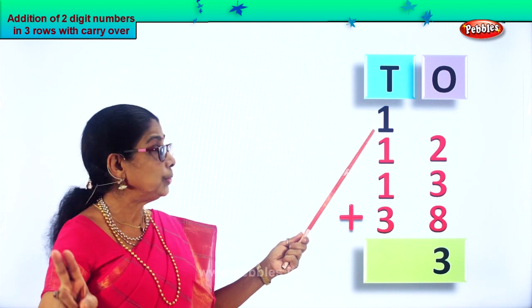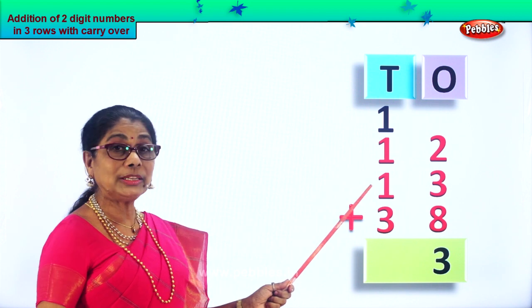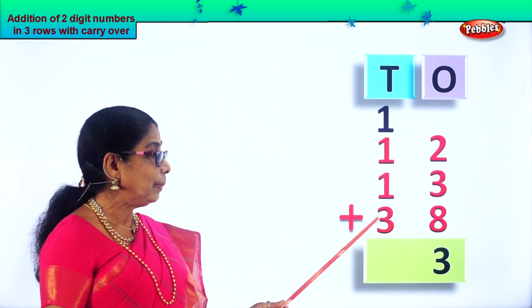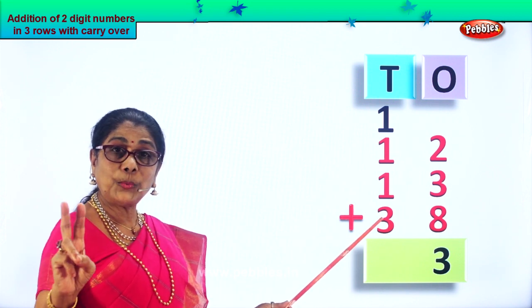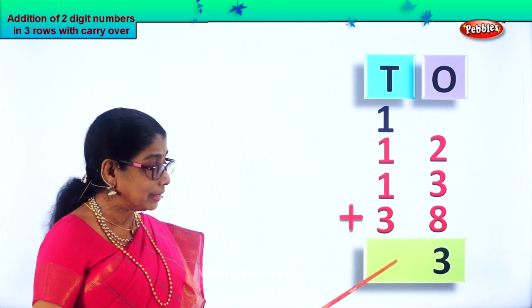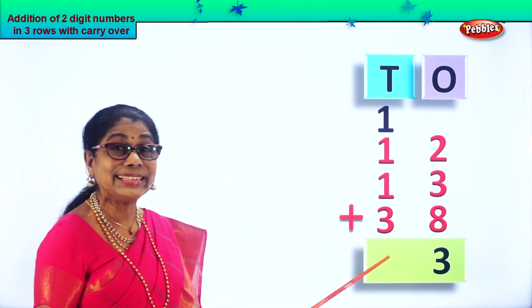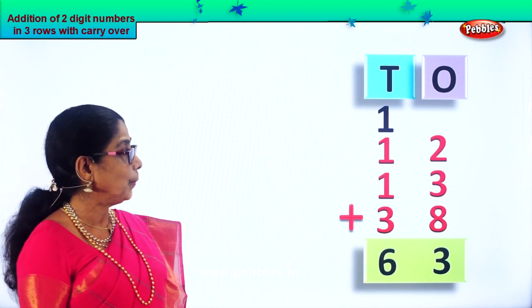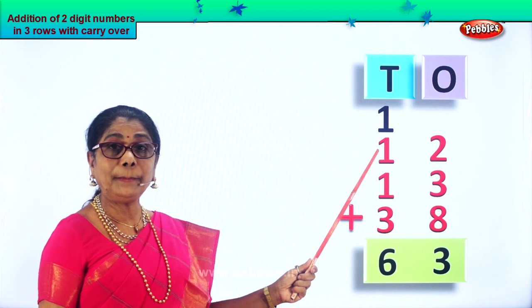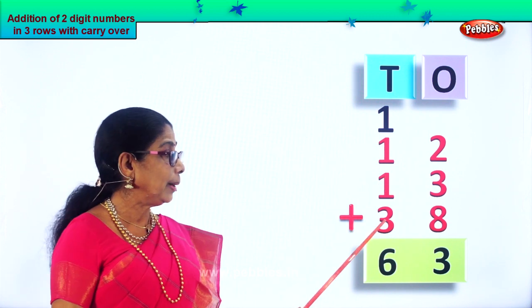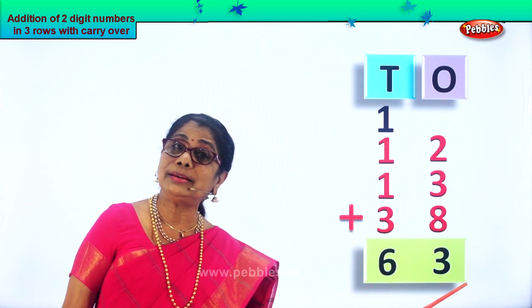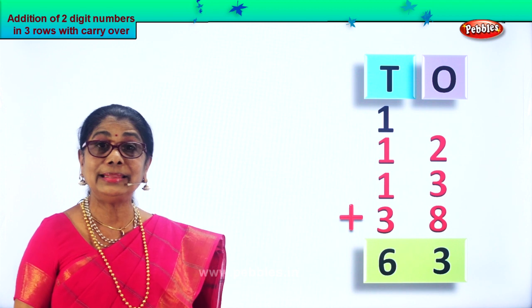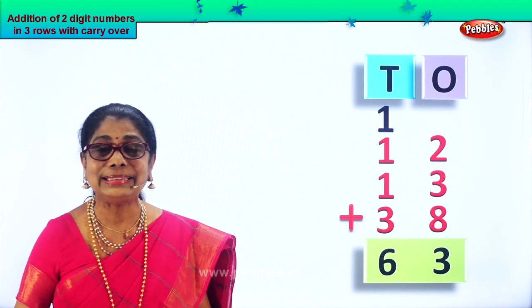One plus one is two. Two plus one is three. Three plus three: four, five, six. So we got six tens here. Twelve plus thirteen plus thirty-eight gives you the answer sixty-three — that is six tens and three ones.